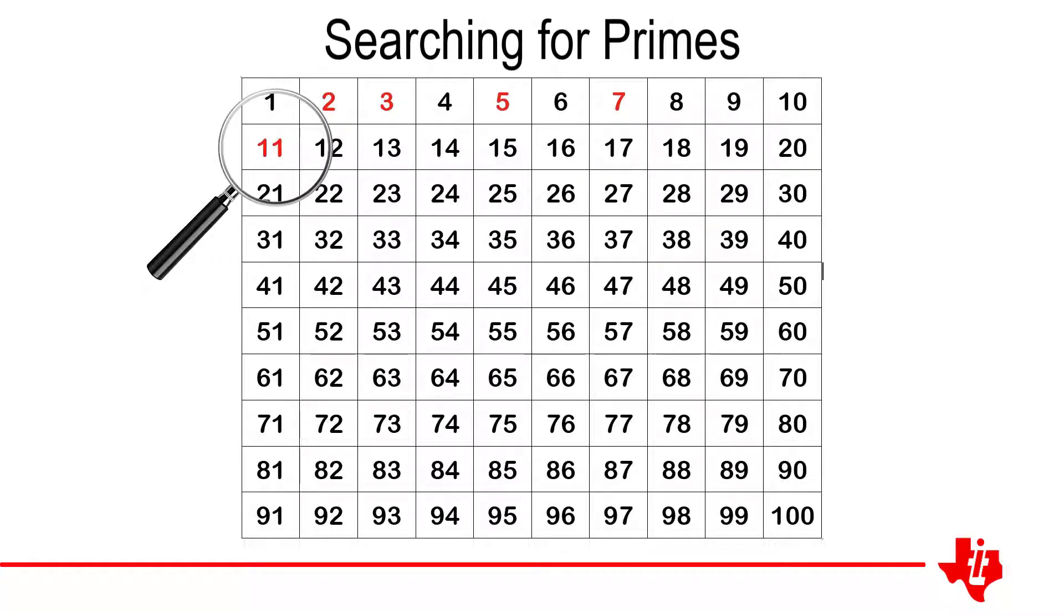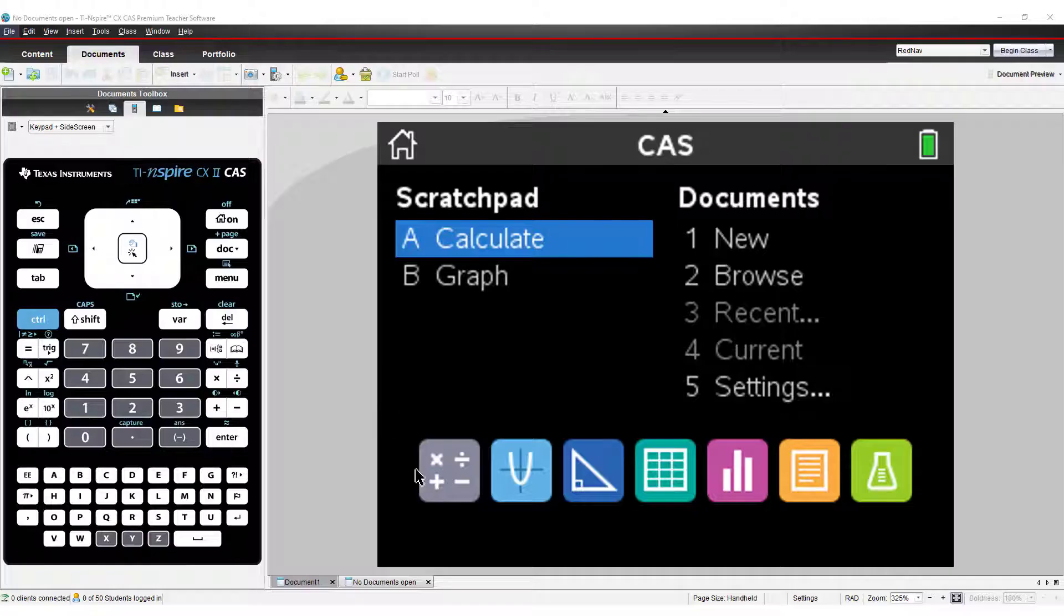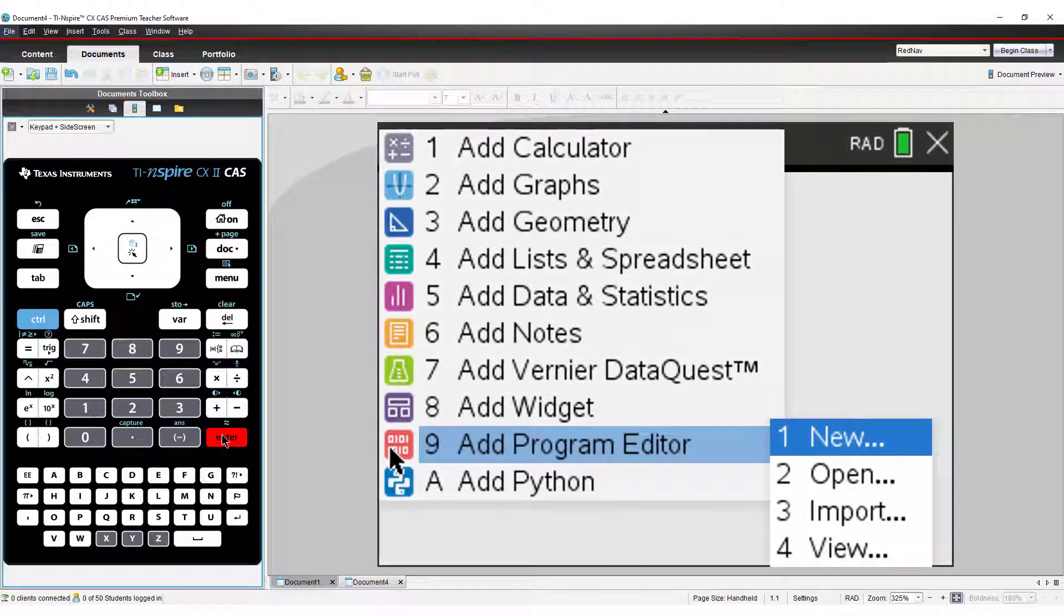In this particular example we're searching for prime numbers between two values. Since we don't know how many prime numbers we might find, we don't know how big the list will be. So in cases like this we start with an empty list.